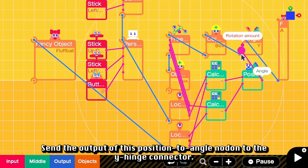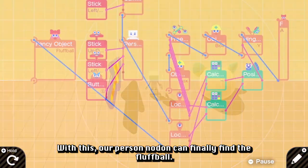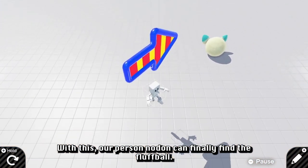Do note that I use the person coordinate minus the fluffball coordinates and not the other way around. Then, send the output of this position to anchor Nodon to Y hinge connector. With this, our person Nodon can finally find the fluffball.